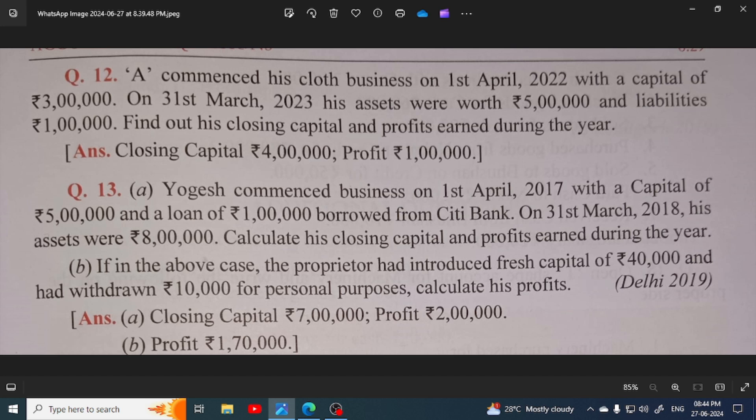After that, on 31st March 2023, just a year after the accounting year end, the worth of assets is 5,00,000 rupees and liabilities is 1,00,000 rupees. You are asked to find out closing capital and profit earned during the year.